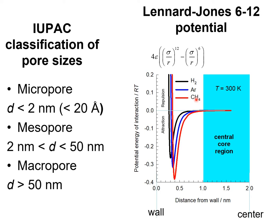Close to the wall, for smaller values of R, repulsion forces are dominant. Further away from the wall, attraction forces come into play. The depth of the energy well is dictated by the epsilon, or energy parameter, which is largest for methane and smallest for hydrogen, reflecting the stronger adsorption of methane. Argon's adsorption strength is stronger than hydrogen's.